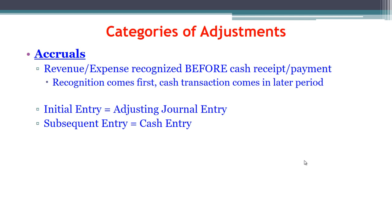We're always going to see two entries — these come in pairs. Any adjusting entry comes in a pair. For the accrual, the initial entry is the adjusting entry; this is the one that takes place at the end of the period. The subsequent entry is the next entry later on, sometime in the next period, that handles the cash related to this adjusting entry.